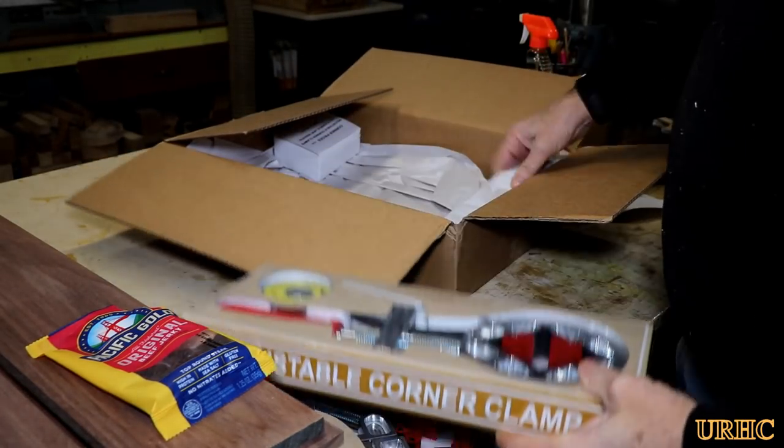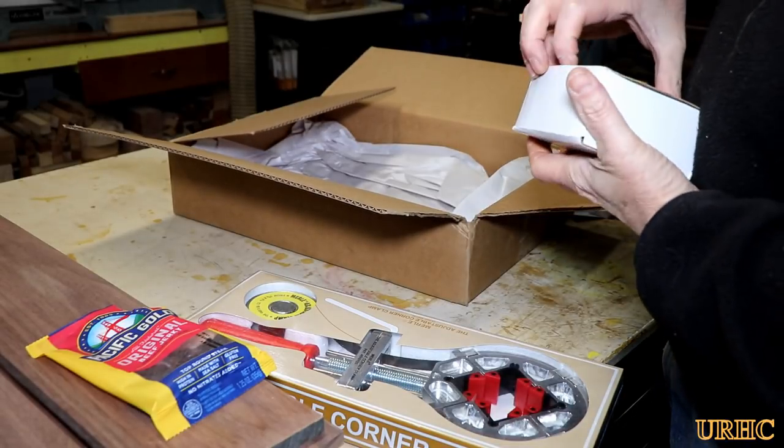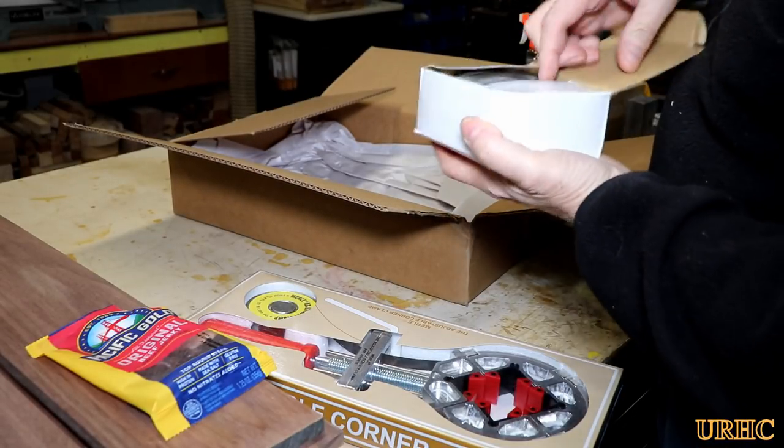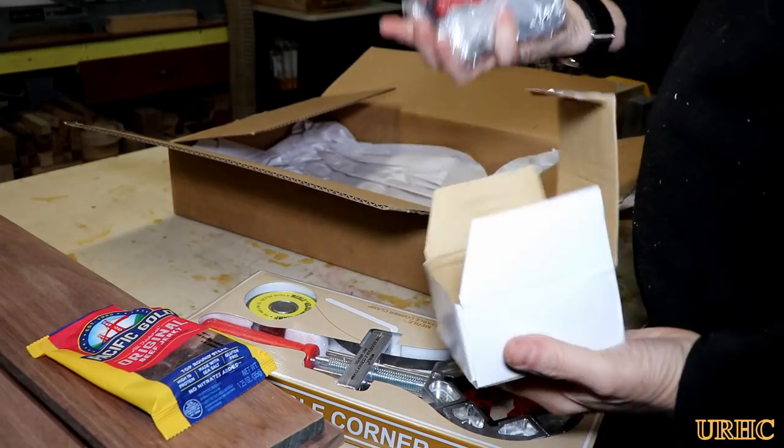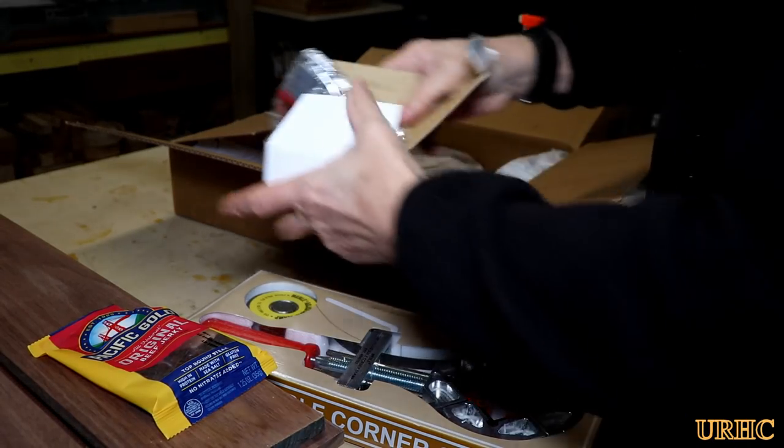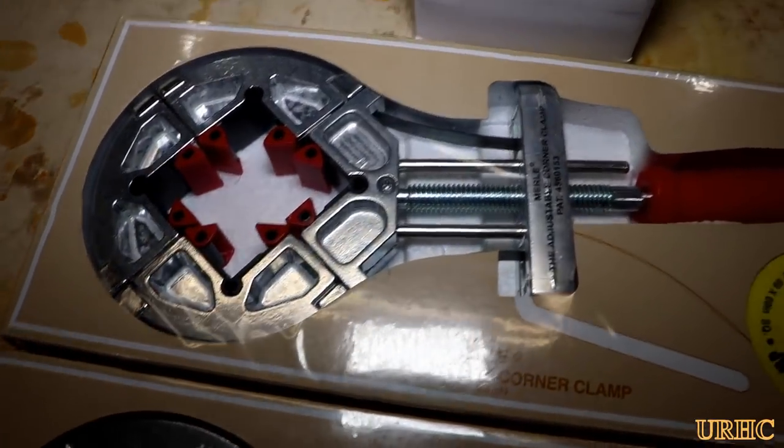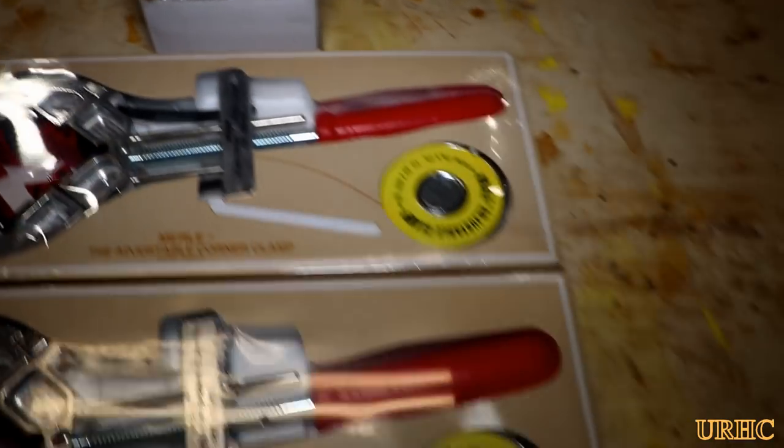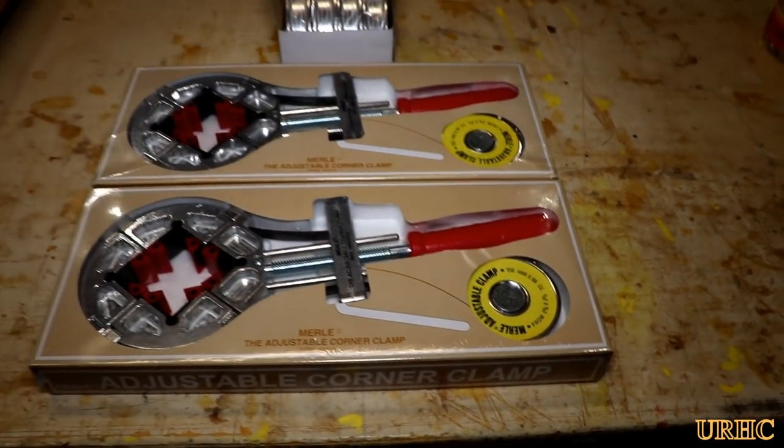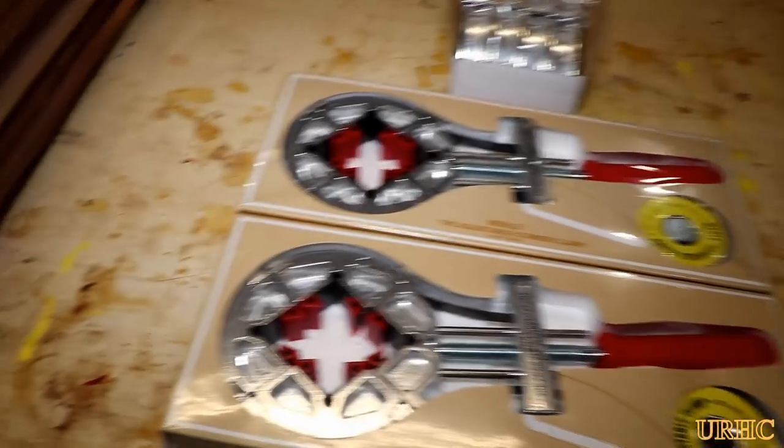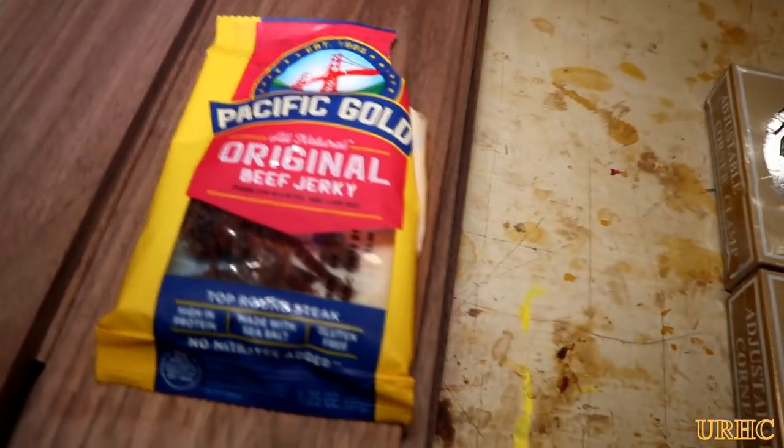They just arrived today and I'm unpacking them here. You can see I got two clamps and then I got an extra set of the corners so I can do some six-sided items with them. Here's what the clamps look like. They're quite a bit larger than what I expected them to be. They really are a nice-looking clamp and they're really pretty big and heavy.